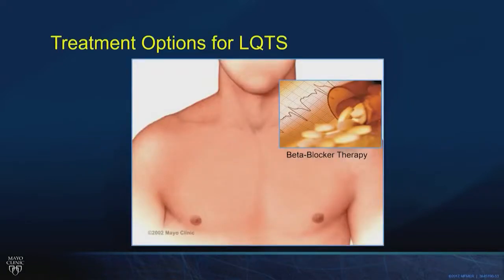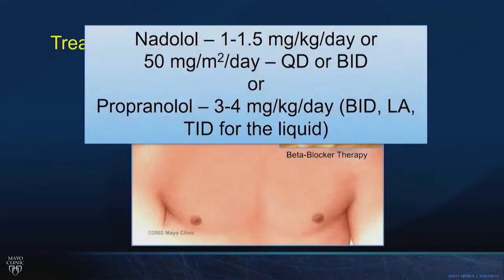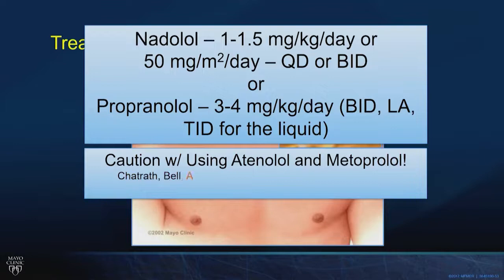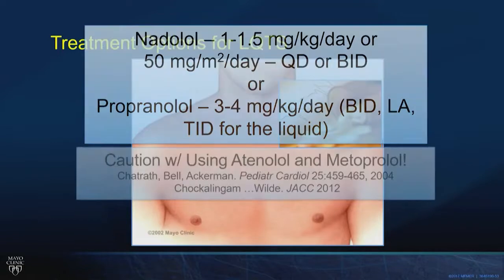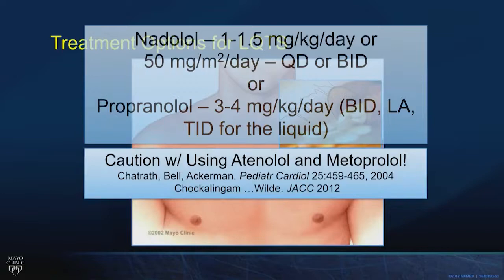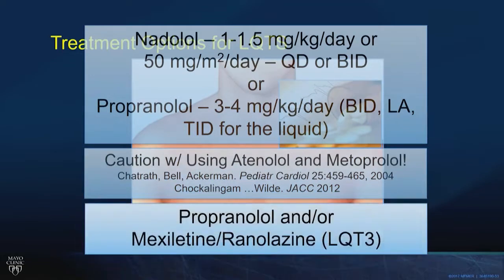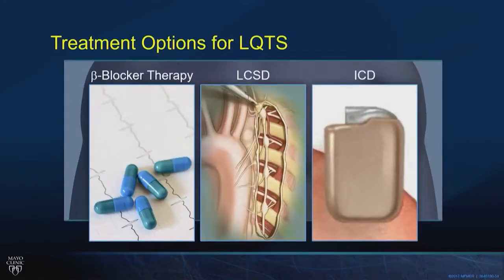Beta-blocker therapy is the pharmacologic treatment of choice. Like in CPVT, use nadolol. If you don't have access to nadolol, use propranolol — the other non-selective beta-blocker. Do not use beta-1 selectives — atenolol or metoprolol — in any genetic heart rhythm condition. For LQT3, modify therapy with propranolol as the beta-blocker of choice plus mexiletine.